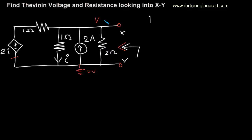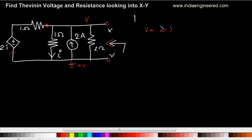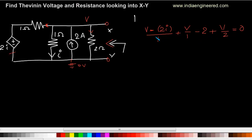Now we are going to write KCL at this node. Currents leaving this node we assume as positive: the current leaving in this direction will be (V minus 2I) divided by 1 ohm, plus the current going through this 1 ohm resistance will be V by 1. The current entering we assume as negative: minus 2I, plus the current leaving in this direction will be V by 2. This equals zero — that is KCL at this node.